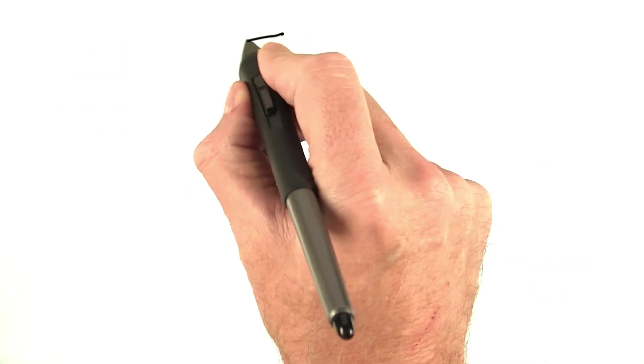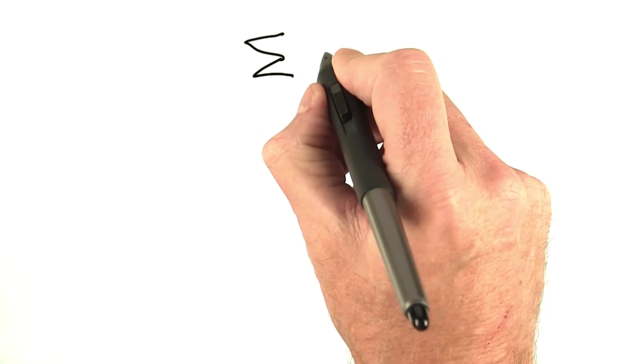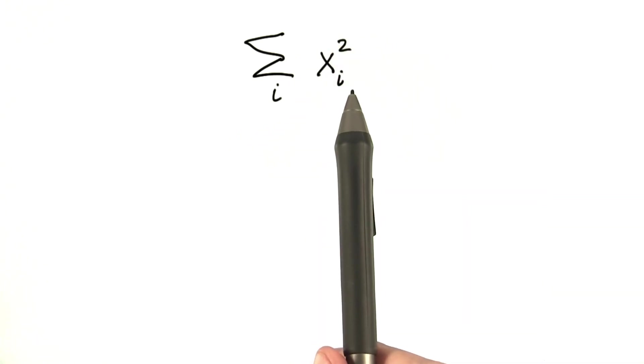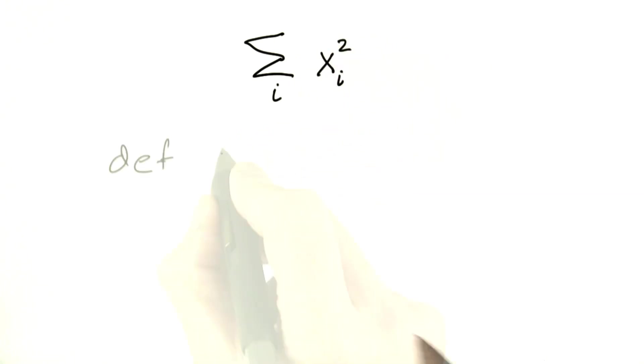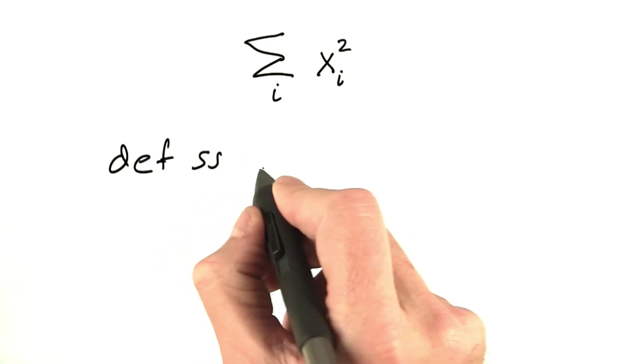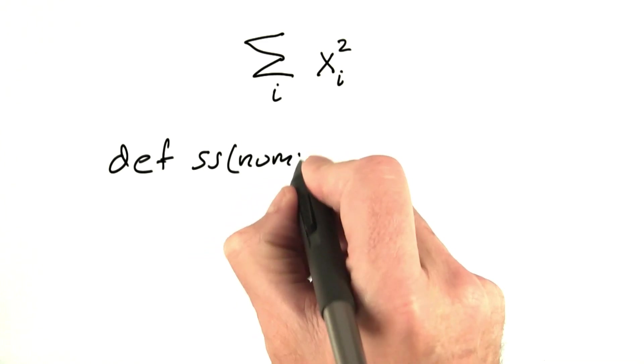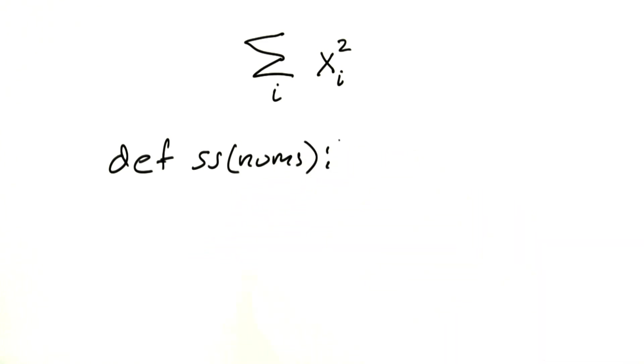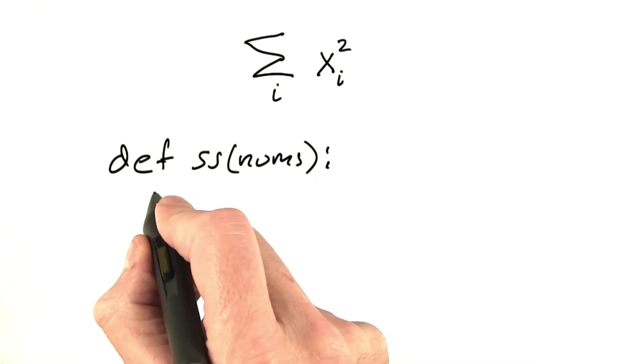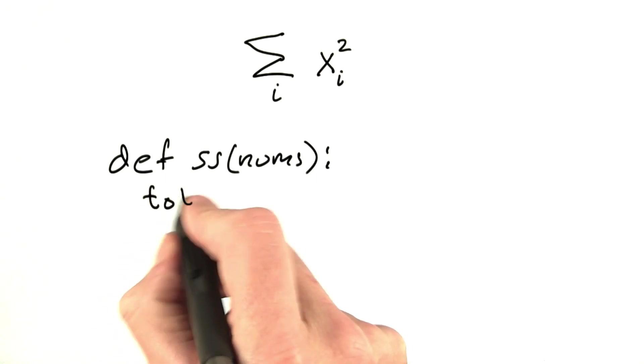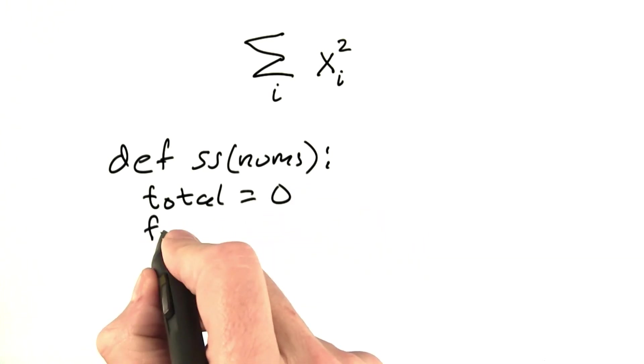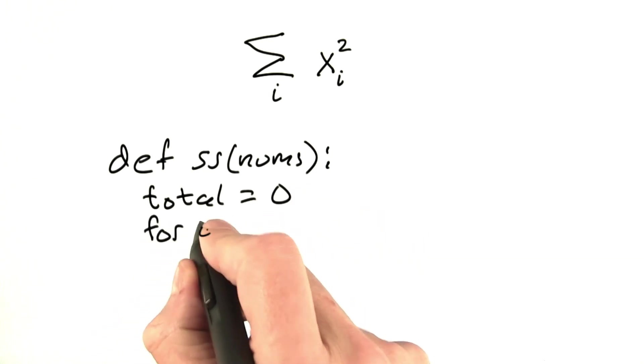For example, suppose I ask you to compute the sum of a list of numbers. Here's the mathematical formula, and I ask you to write a function, which we'll call SS for sum of squares, which takes a list of numbers as input. If you've taken CS101, you might write a solution like this. We'll initialize the total to be 0. We'll go through the indices of the numbers.